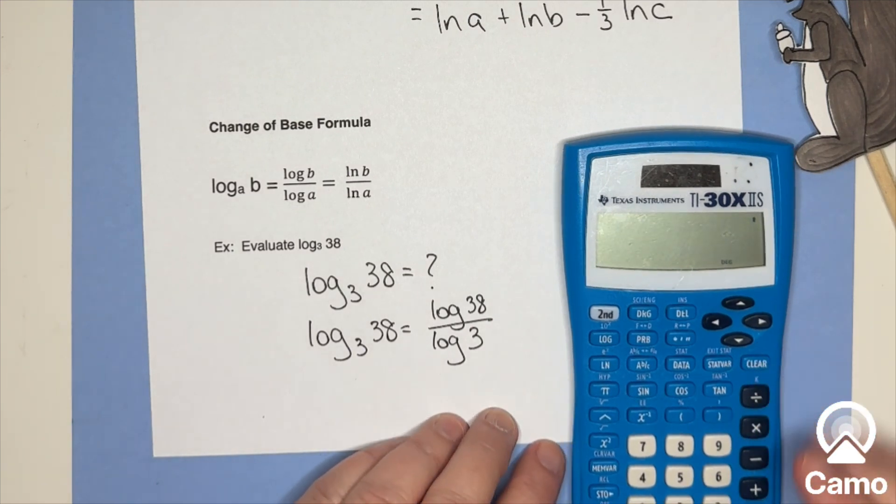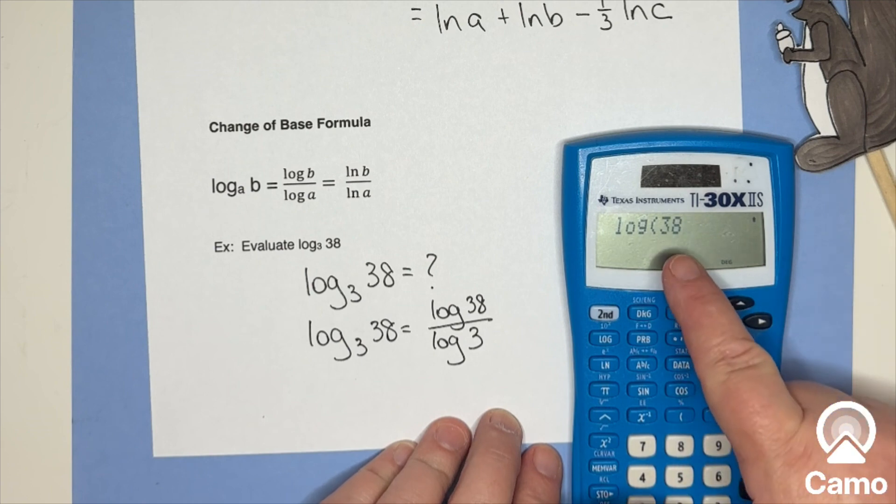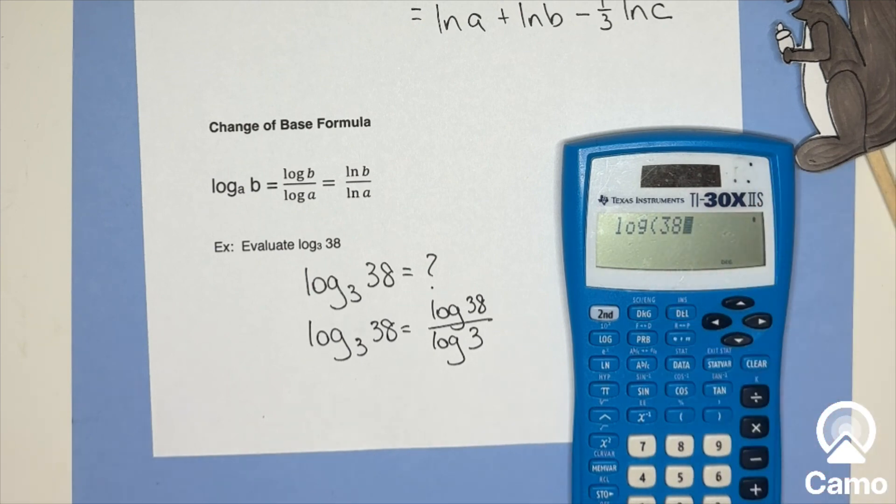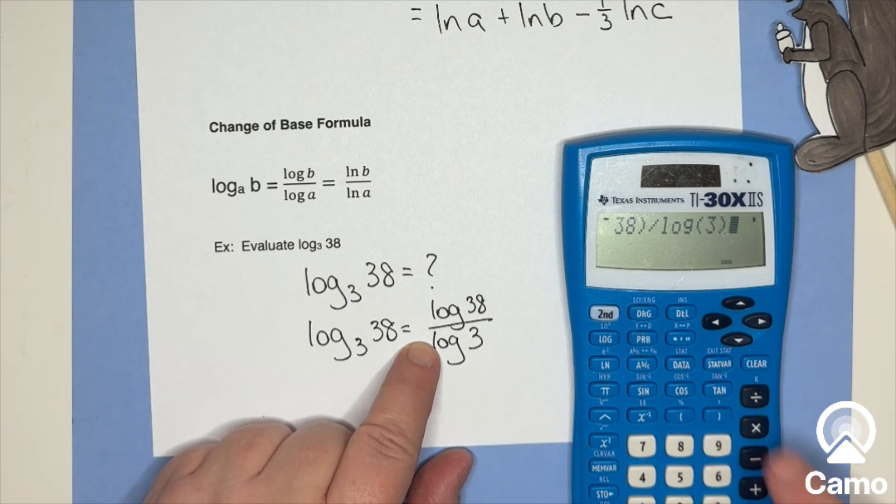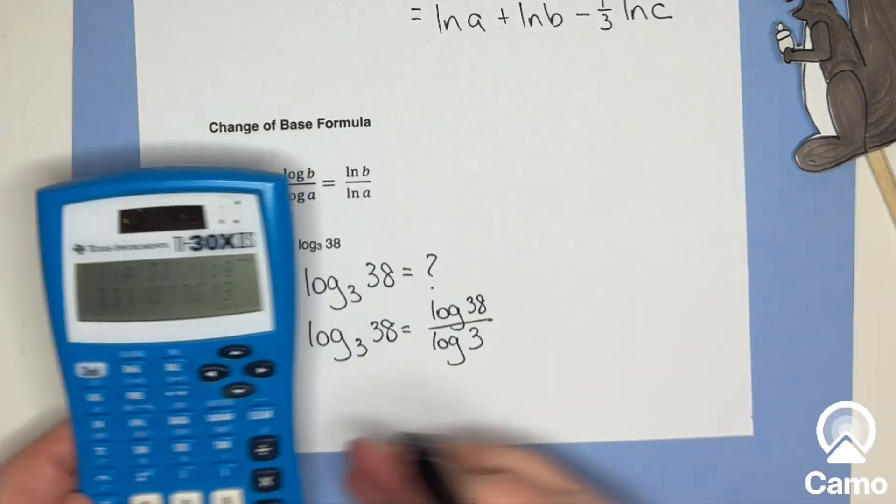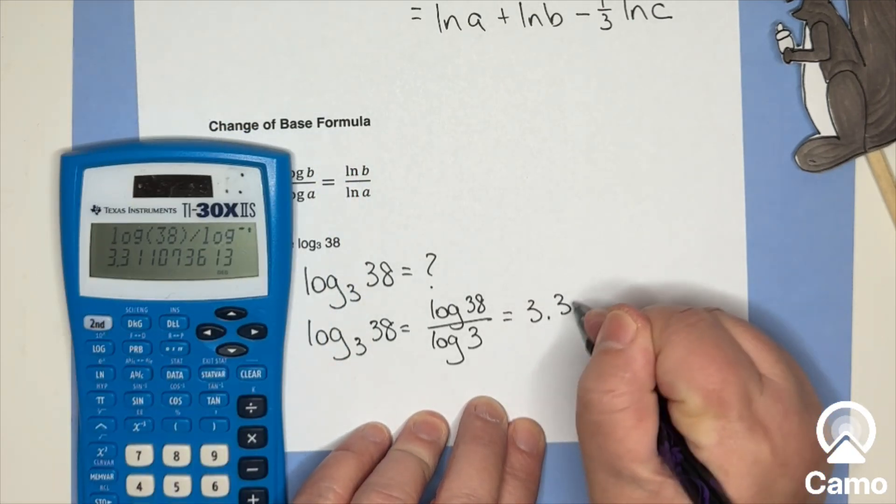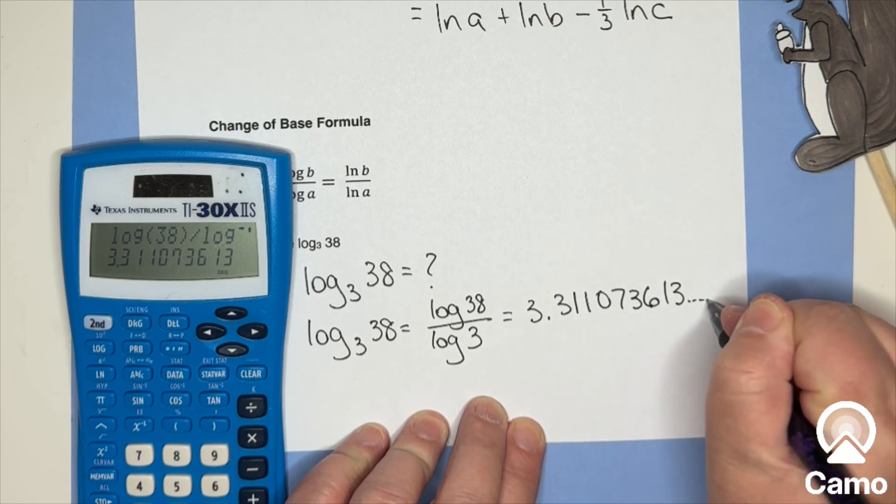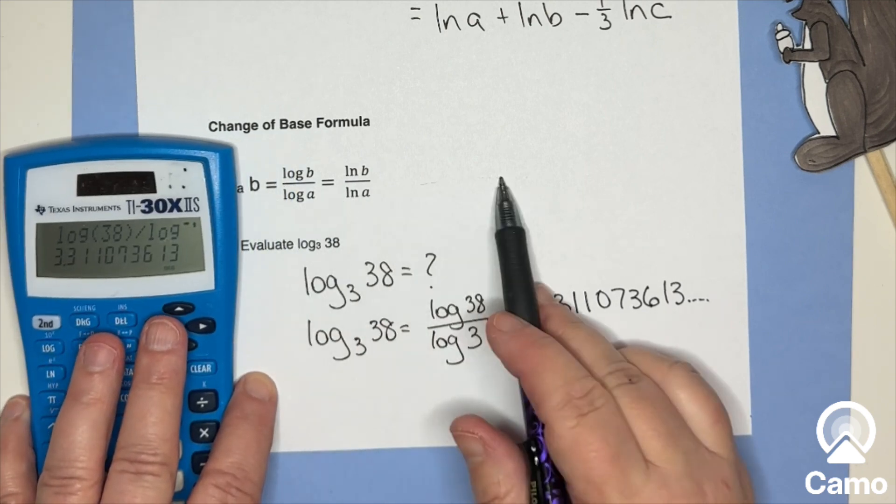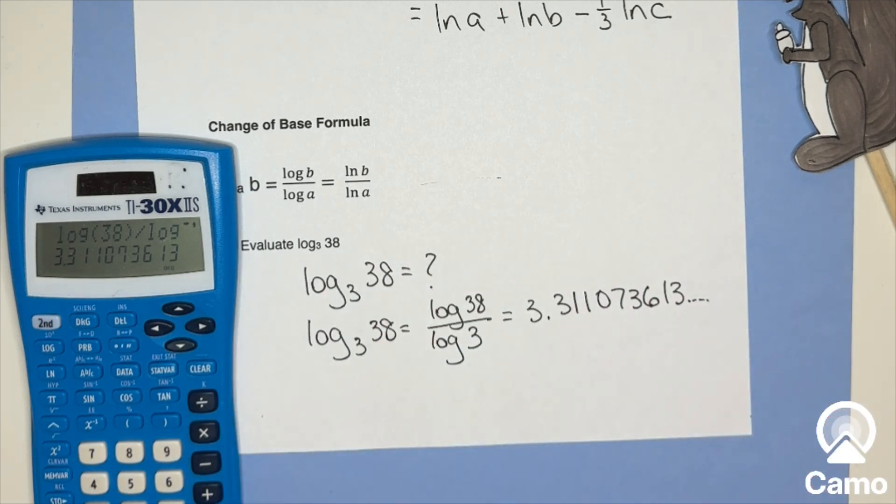What I want to do is I want to take log of 38. Now make sure you close the parenthesis or else you end up with logs inside of logs. So I'm going to close that and I'm going to divide by common log of three and close that. And then I get, let's see, what is that? 3.311073613, some other stuff. And it doesn't say how to round it. So I'm just going to leave it like that for this.